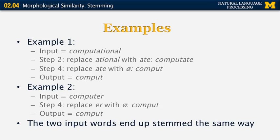The second example is simpler. The word 'computer' only matches a specific rule in step 4 of the Porter Stemmer, which tells us to drop the final '-er' and get 'comput' (C-O-M-P-U-T) — the same stem as 'computational'. This is really the lesson: we wanted those two words to stem to the exact same representation, and Porter's algorithm makes sure that they do.